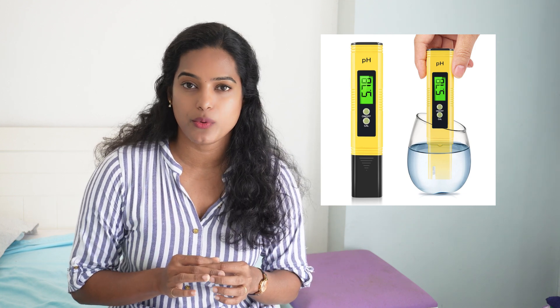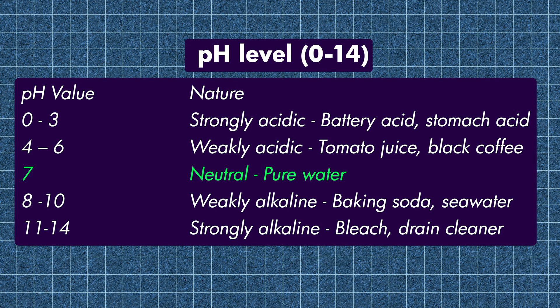If you get a pH meter, you can take a pH reading. pH 7 is neutral. This is high pH. Mostly, the pH value is just high.